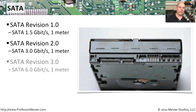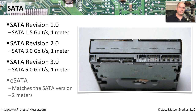We didn't change the cable size on revision 3.0 either, but we did double the speed again up to 6.0 gigabits per second. External SATA is used for drives that are outside of your computer's case, and generally the speeds of eSATA will match the SATA type you have inside your computer. The cable distance, however, can be a little bit longer — up to about 2 meters — so you can move it away from your computer.